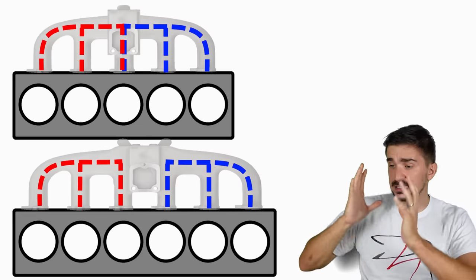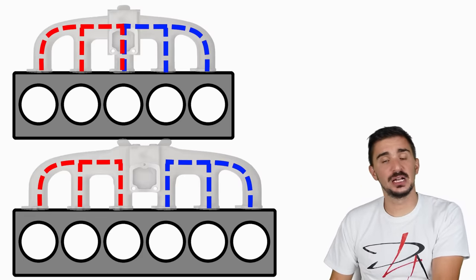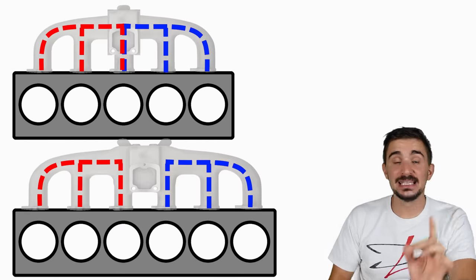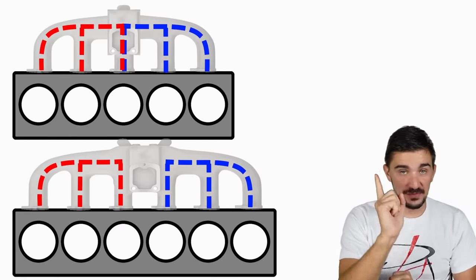The theoretical difference in runner length really is the same. So why then does a single carb, single intake manifold setup work for the Inline 6, but not the Inline 5?